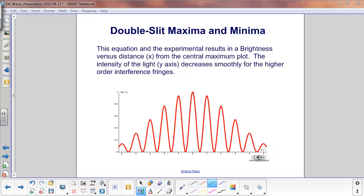The experimental results, as explained by the equation on the previous slide, will give us a brightness versus distance plot. Right here in the middle, this is the central maximum. And you can see how its intensity, its brightness, is greatest right here.